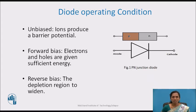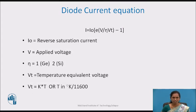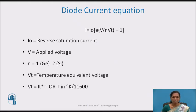The diode follows the diode current equation: I = I₀ × (e^(V / η·Vt) − 1). Here, I₀ is the reverse saturation current, V is the applied voltage, and η is the material constant — η = 2 for silicon and η = 1 for germanium. Vt can be calculated as K×T, where K is the Boltzmann constant and T is the temperature in Kelvin. It can also be calculated as T (in Kelvin) divided by 11600, and it is known as the temperature equivalent voltage.